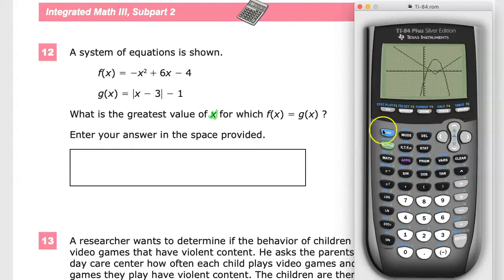So I can see that the point where I have the greatest value of x is going to be right here. Now there's a few ways that you can figure out what that answer is. You can start checking it out in the table, hit second, and then go to the table.